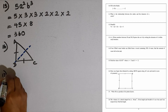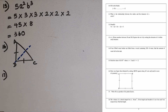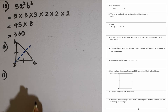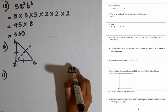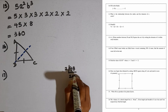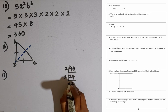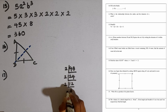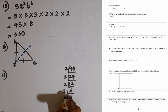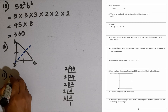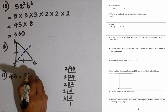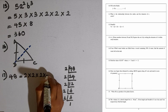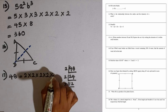Question number 17. Write 48 as a product of its prime factors. We divide 48 by prime numbers. Starting with 2: 2 times 24, then 2 times 12, then 2 times 6, then 2 times 3, then 3 times 1. So 48 can be written as 2 times 2 times 2 times 2 times 3. This is the product of prime factors.